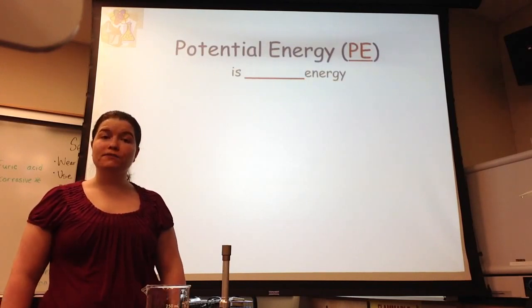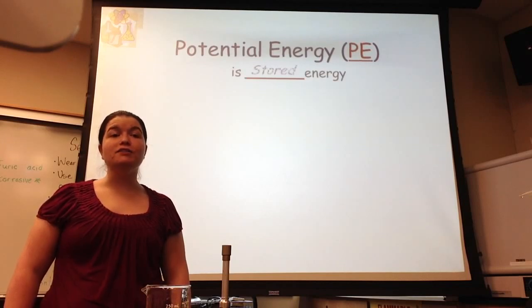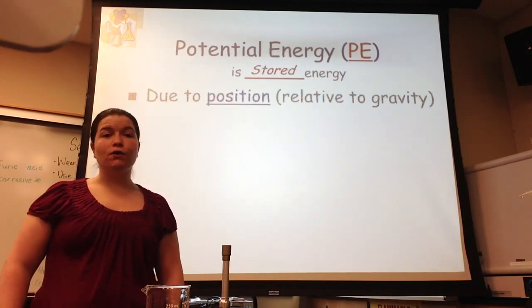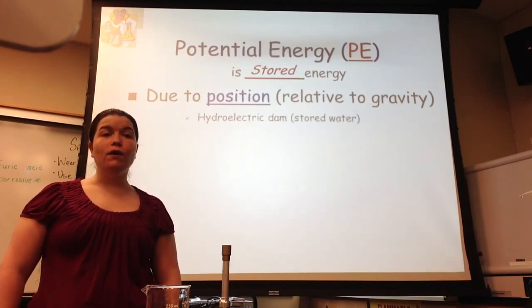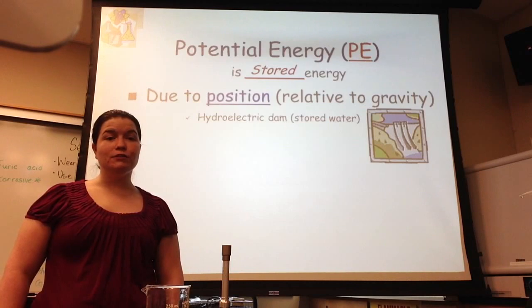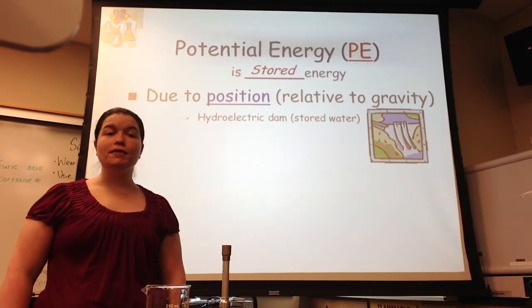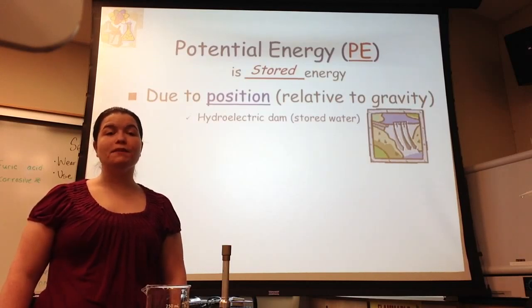Energy comes in a couple different forms. The first type of energy is called potential energy, or PE, and it is stored energy. The potential energy can be stored due to position, meaning relative to gravity. One example of stored energy due to position is the water behind a hydroelectric dam. The water at the top of the dam has a lot of potential to do energy as it moves from the top of the dam to the bottom.